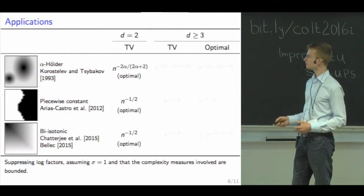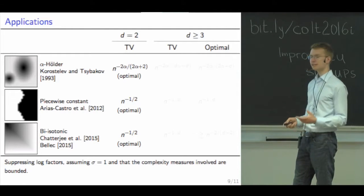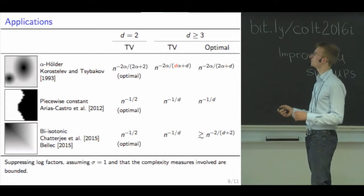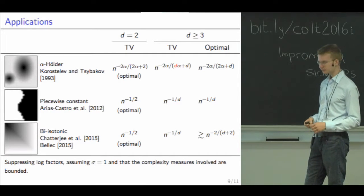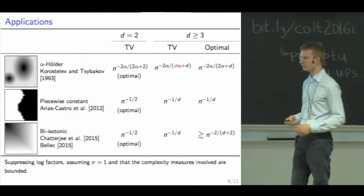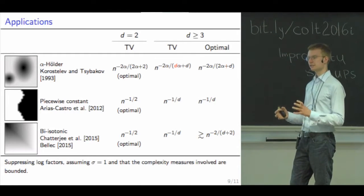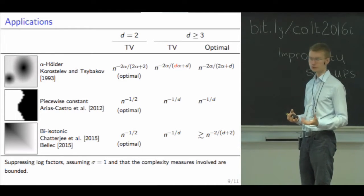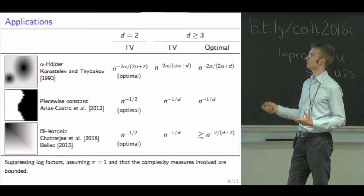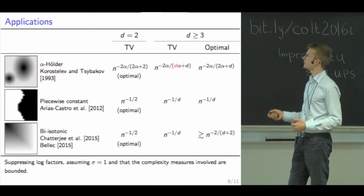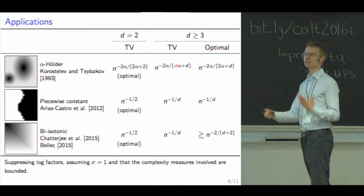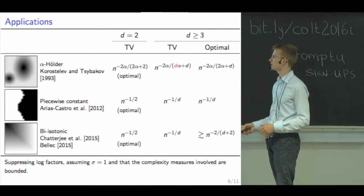In high dimensions, unfortunately we are no longer optimal in all these cases. For Hölder functions we pick up an additional factor of d in the exponent, which is clearly suboptimal. This seems to be an intrinsic problem with total variation denoising, since we're picking up the complexity of the boundary of certain cells used to approximate the function. Specialized solvers might be better tuned. But it's still remarkable that the 2D denoiser manages to be optimal in all these cases, which may be one reason it's so popular in practice.